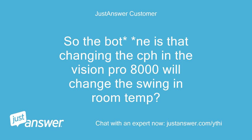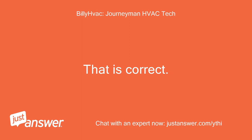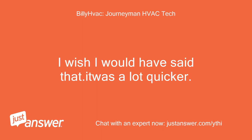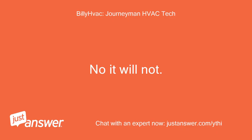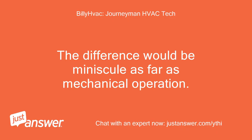So the bottom line is that changing the CPH in the Vision Pro 8000 will change the swing and room temp? That is correct — I wish I had said that, it was a lot quicker. The last question: if I change the CPH from 5 to 4 or to 3, will it in any way hurt my equipment? No, it will not. The difference would be minuscule as far as mechanical operation.